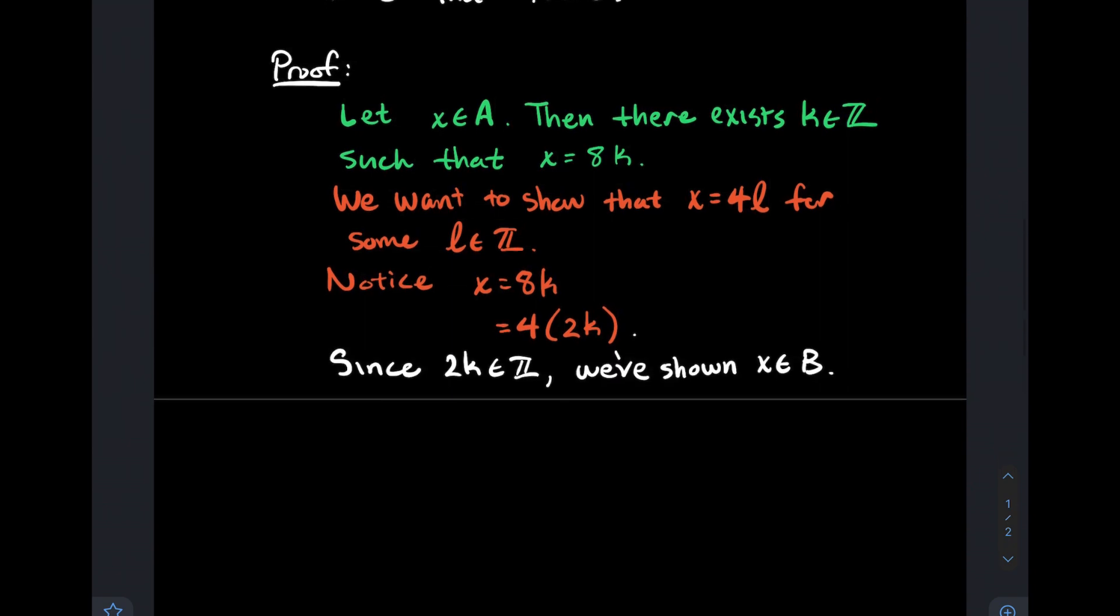Since 2k is an integer, we've shown that X is in B. So what else is going on here? When I wrote down let X be an element of A, I didn't tell you that X was some specific element of A. All I knew was just generally what do all the elements look like. From that vague information, we're able to conclude that X had to be in B.